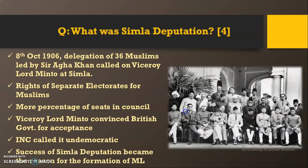These two demands were put forward in front of the then Viceroy Lord Minto. The Viceroy convinced the British government for the acceptance of these two demands and gave assurance to the Muslims that their demands would be fulfilled. For the Muslims, these efforts pointed the way to an organized approach to solve their problems, and the success of the Shimla Deputation became the reason for the formation of the Muslim League.